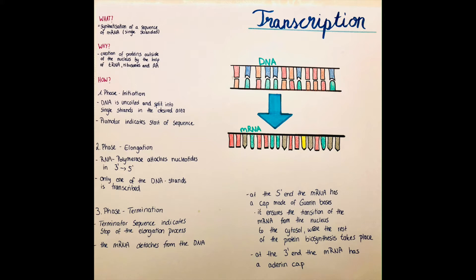How is the transcription made? It's in three phases through which I will go now. The first phase is called the initiation phase, the second phase is the elongation phase, and the third one is the termination phase.